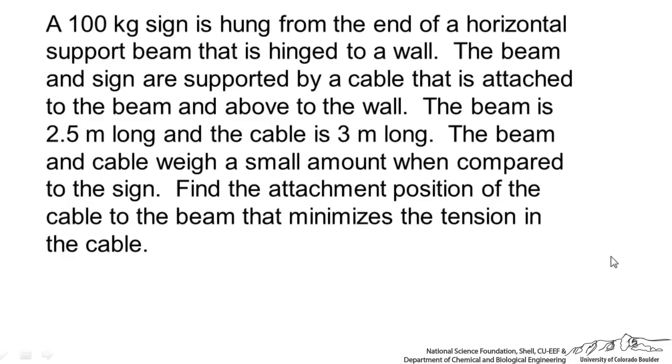We have a 100 kg sign hung from the end of a horizontal support beam that is hinged to a wall. The beam and sign are supported by a cable attached to the beam and above to the wall. The beam is 2.5 meters long, the cable is 3 meters. The beam and cable weigh a small amount when compared to the sign. Find the attachment position of the cable to the beam that minimizes the tension in the cable.